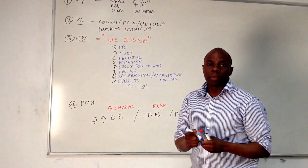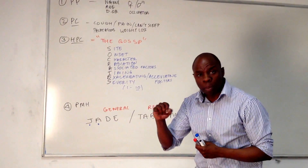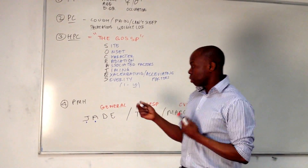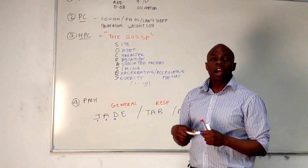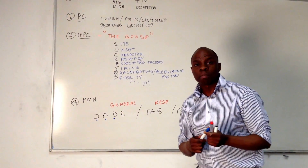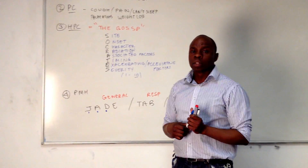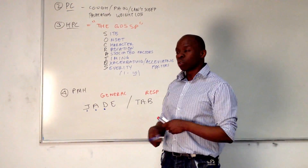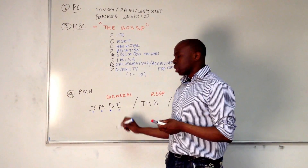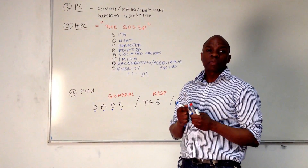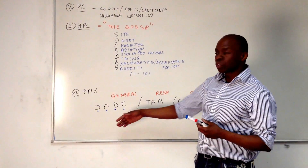A is for anaemia. Have you ever been quite pale or needed a blood transfusion, like a top-up of blood? Then move on to D — D is diabetes mellitus. Have you ever suffered from diabetes before, or do you suffer from diabetes now? E is epilepsy. Have you ever suffered from epilepsy before, or do you suffer from epilepsy at the moment? And that covers all your generals.